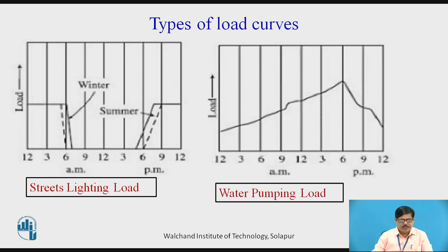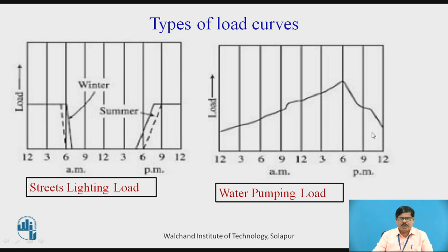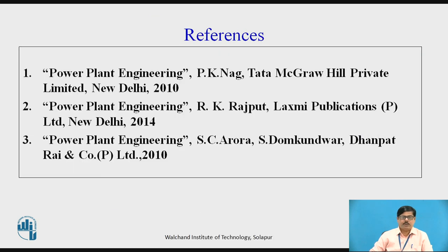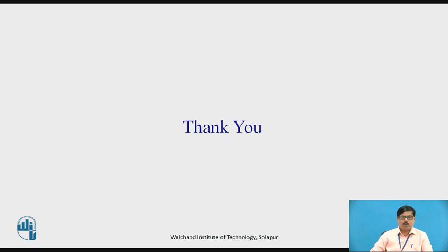The next type of load is called the irrigation load or water pumping load. This type of load is the electrical power required for pumps driven by motors to supply water to the fields. Generally, this type of load is supplied for 12 hours during the night period. As we can see, it is also continuously varying, and during the off-peak period it reaches a maximum. Thank you.